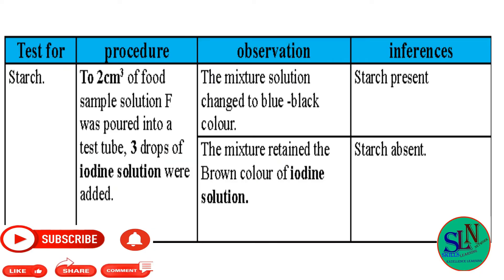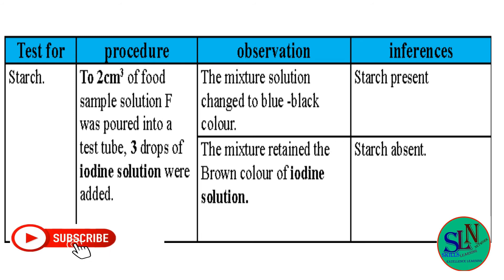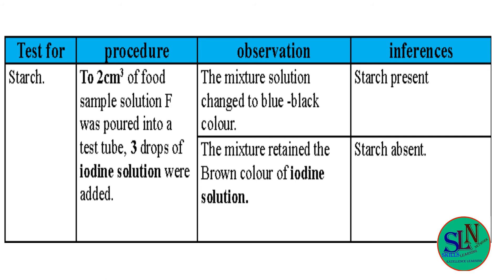I think you have seen the test for starch — the observations and the inferences. This is a general table for the test of starch, and you are supposed to write it in that way. You are supposed to choose one: whether the starch is absent or present, and then you consider one column for observations and one for inferences. That is the general table of our report for the test of starch.